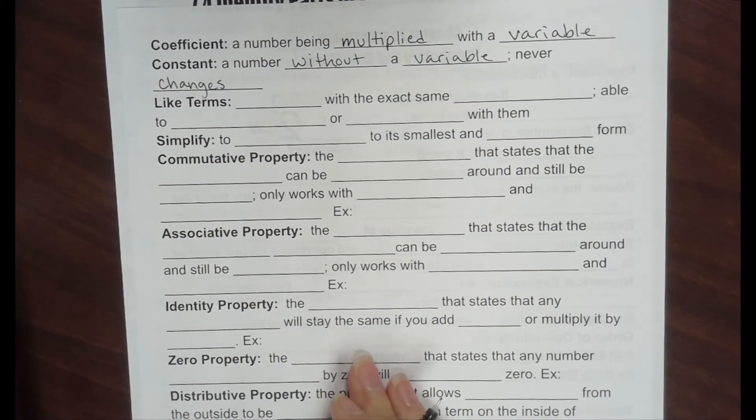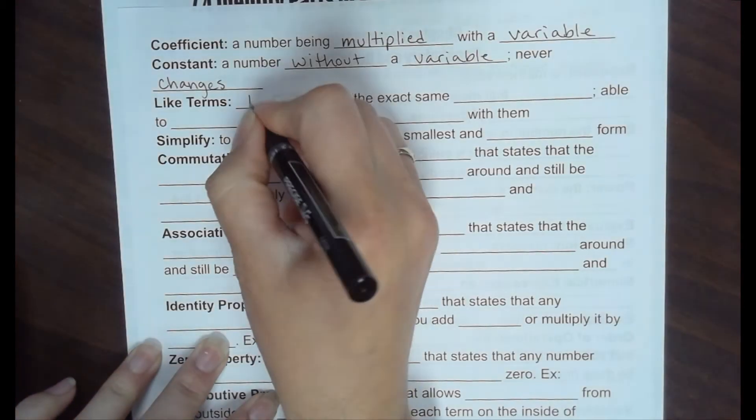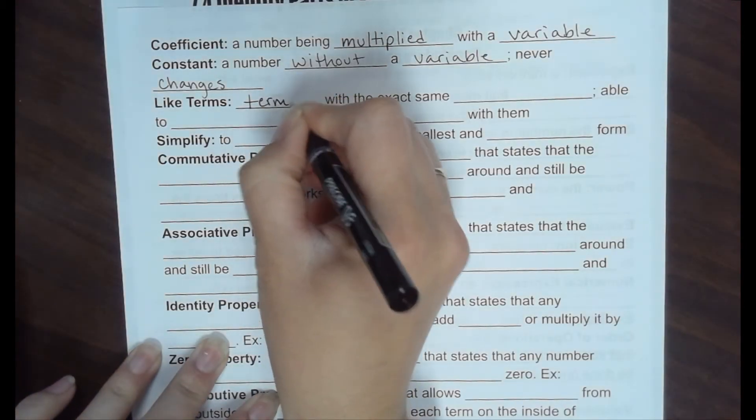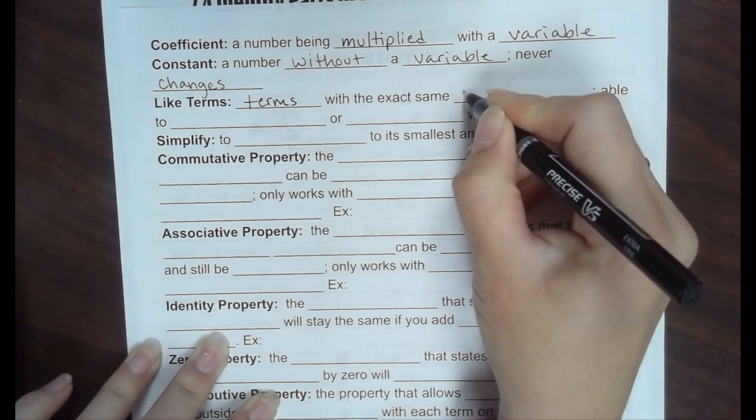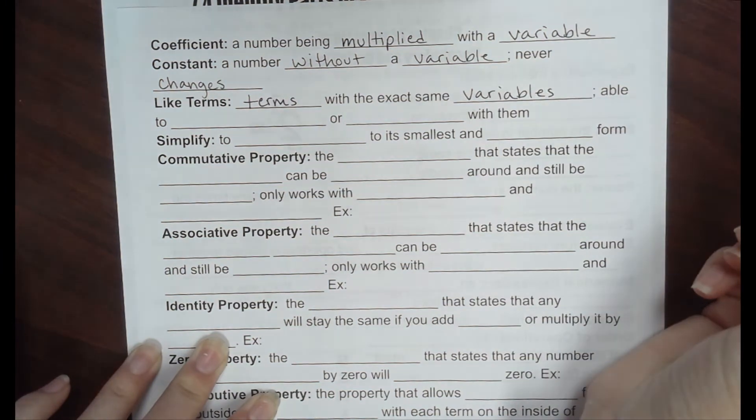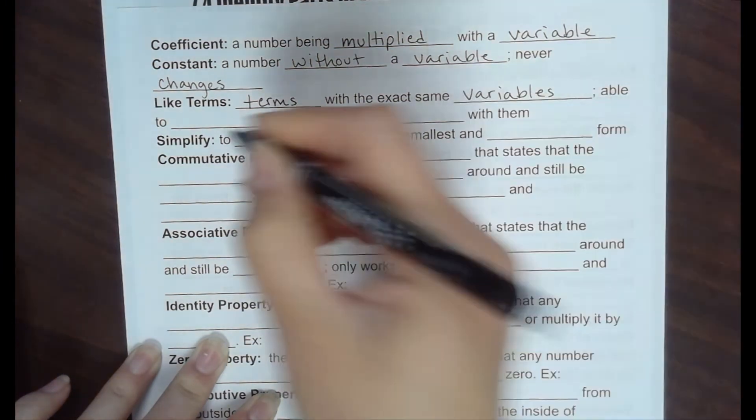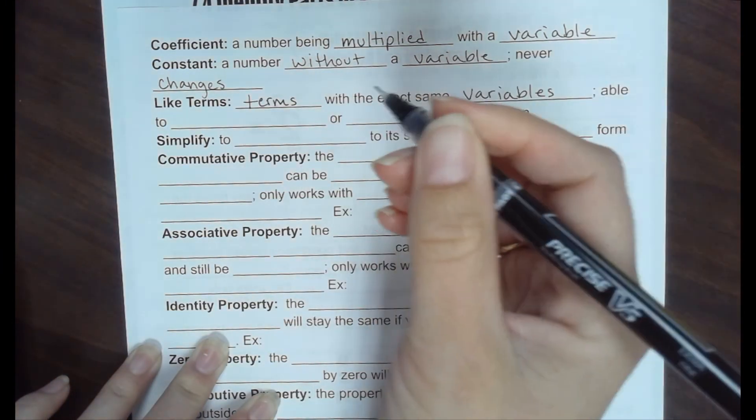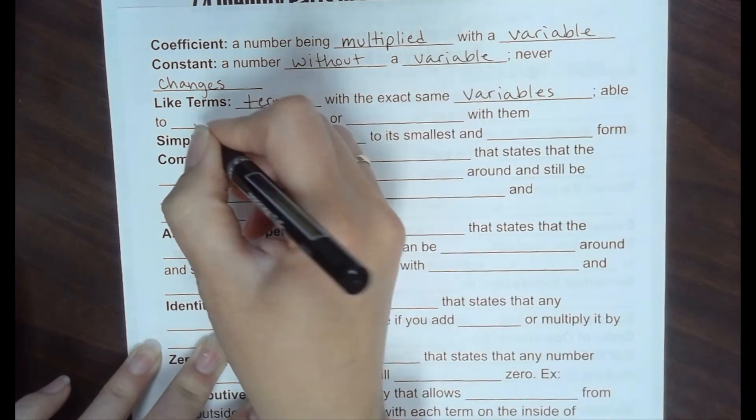And last one is the like terms. Like terms are terms with the same exact variables. They're able to add and subtract with them.